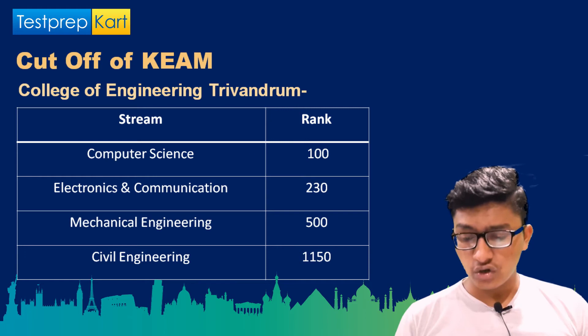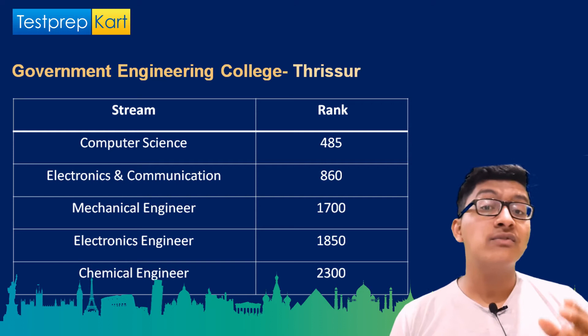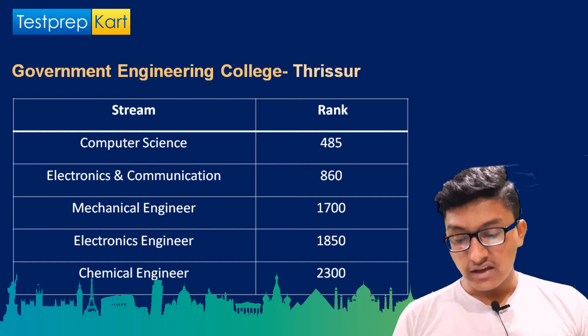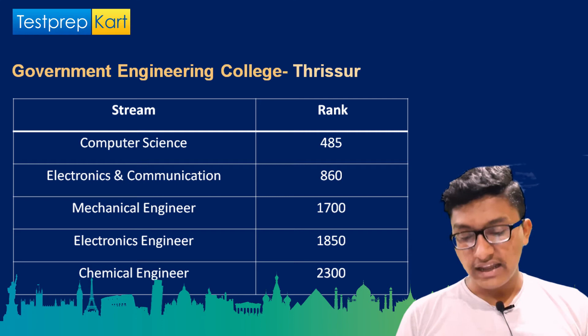For Government Engineering College Thrissur: Computer Science Engineering requires a rank under 485, Electronics and Communication Engineering under 860, Mechanical Engineering under 1700, Electrical Engineering under 1850, Civil Engineering under 2800, and Chemical Engineering under 2300.